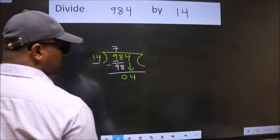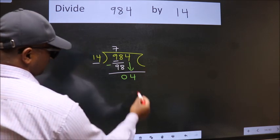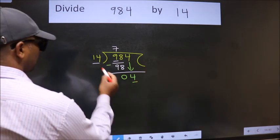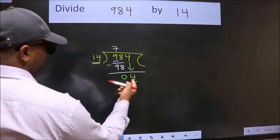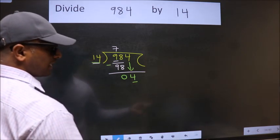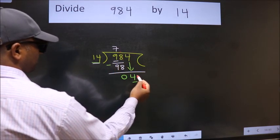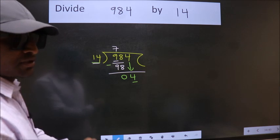After this step, the mistake happens. And the mistake is this: here we have 4, here 14. 4 is smaller than 14, so what many do is they directly put dot, take 0. Which is wrong.